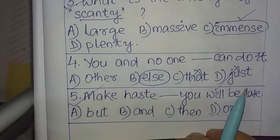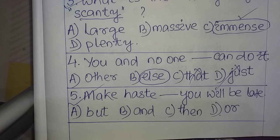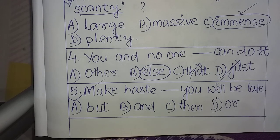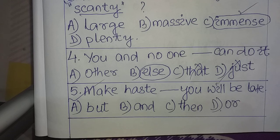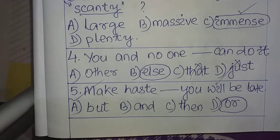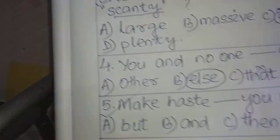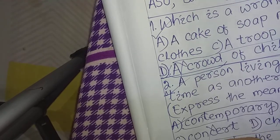Question number five: 'Make haste ___ you will be late.' First understand the meaning of the sentence correctly, then attempt the answer. Options: A) but, B) and, C) then, D) or. The answer to question number five is 'or'. The sentence becomes: 'Make haste, or you will be late.' You can also note it down where necessary.